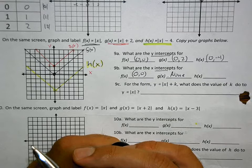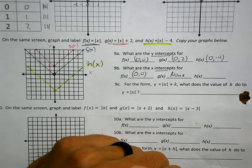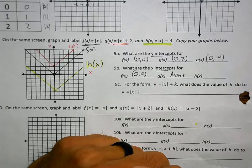Don't forget. There are none. It doesn't touch. Now, h of x, on the other hand, there are two x-intercepts.